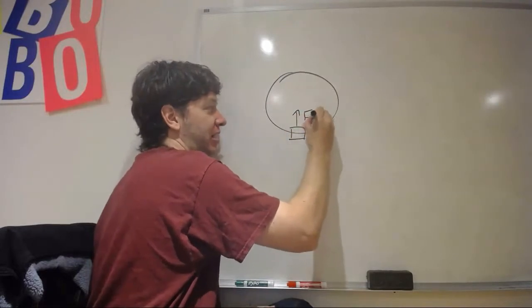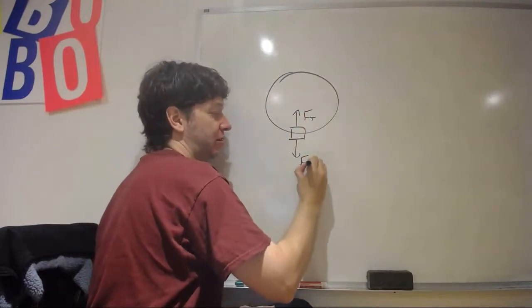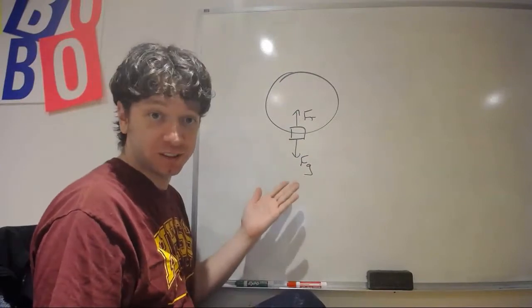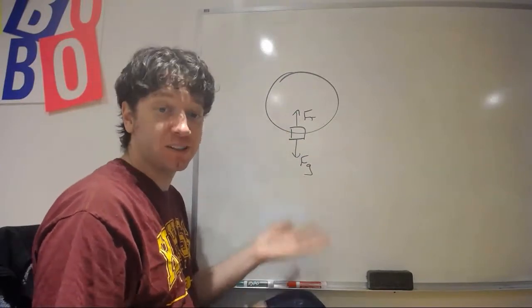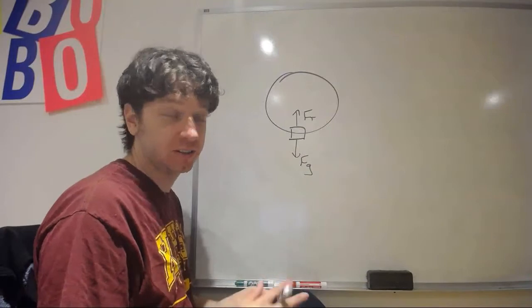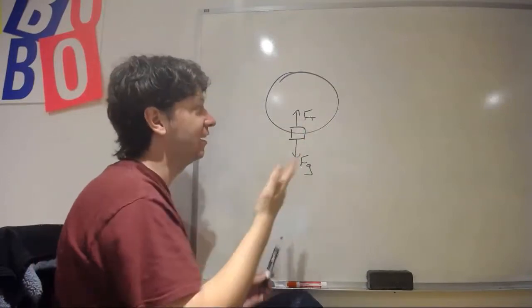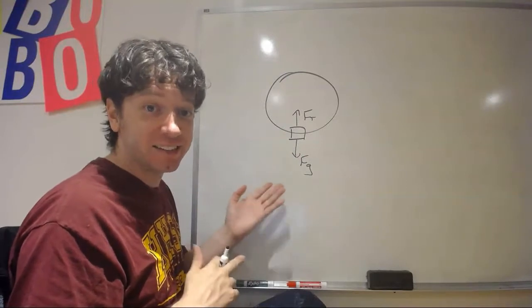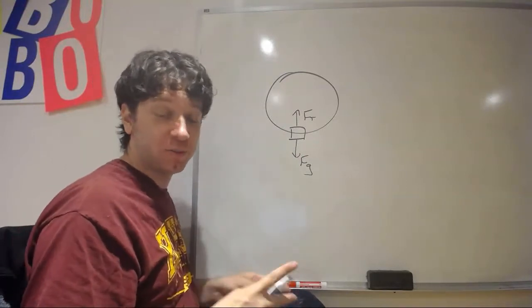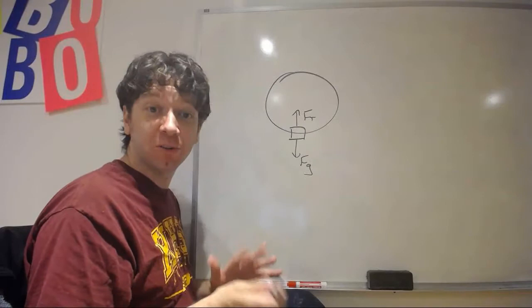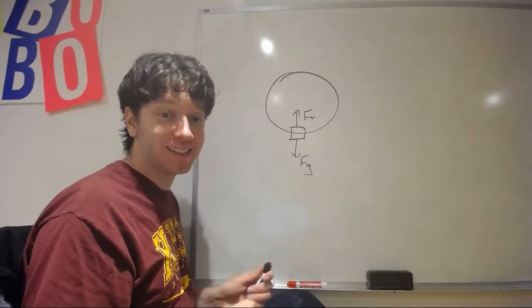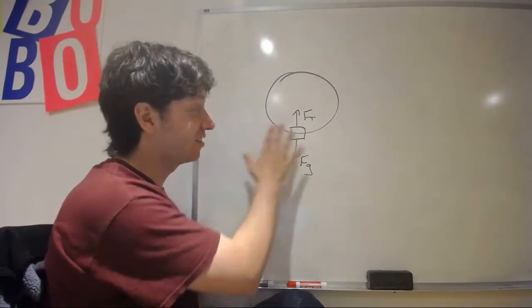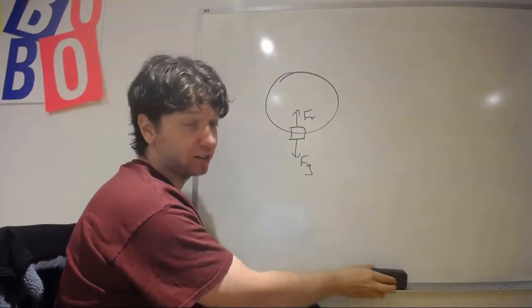Go back to the example of the ball on a string, where we have tension up and gravity down. Centripetal force is a sum of those forces. Both those forces contribute to centripetal force. Obviously, tension is contributing in a positive way and gravity in a negative way in this case, but they still both contribute. So, you should never draw centripetal force on a free body diagram, because it's a net force, which is a sum of the forces that you do draw on a free body diagram.